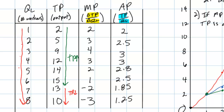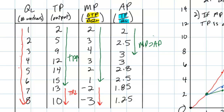The relationship between total product and marginal product is that any time total product is increasing, marginal product is positive — so the range over which total product increases is also when marginal product is positive. When the marginal product of labor becomes negative, total product decreases because additional workers are actually subtracting from the final output of the firm. The final relationship we observe is between marginal product and average product: there's a range of employment — between one and three workers — where marginal product is greater than average product and average product is increasing. Beyond the fourth worker, marginal product became less than average product and average product decreased as a result.